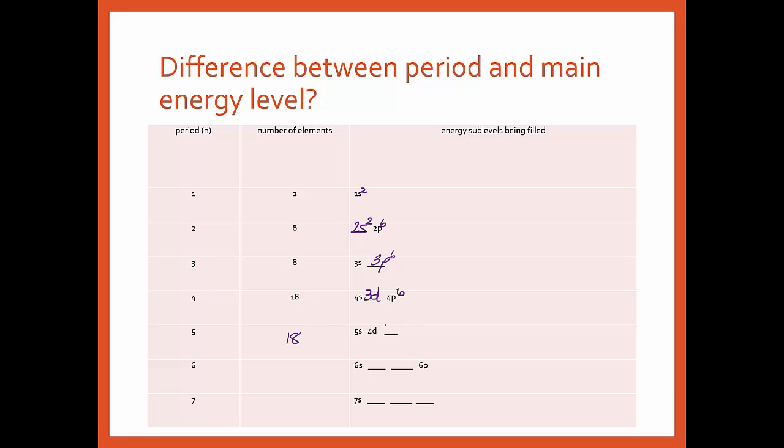Then you have your fifth period. Fifth period also has 18, the 5s, and there's 2 in here and 10 in the d's, and your 5p6. In the sixth, look at what happens. You have your 6s2, then you have a 4f14, then you're going to come back into a 5d10, then 6p6. I think there was maybe a test question like this, which filled first? You just kind of have to look at what filled first.